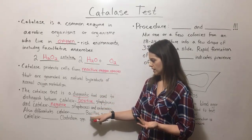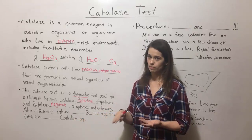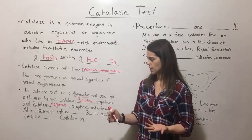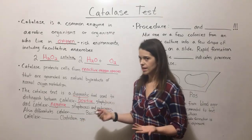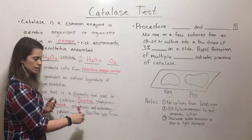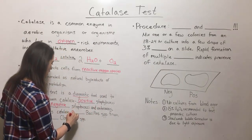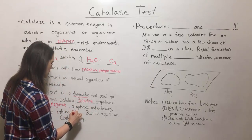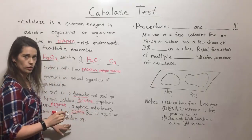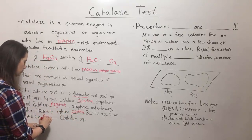Also, Bacillus and Clostridium species are again both gram-positive and both rods, and they can be distinguished with the catalase test because Bacillus species are typically catalase-positive, while Clostridium species are typically catalase-negative.